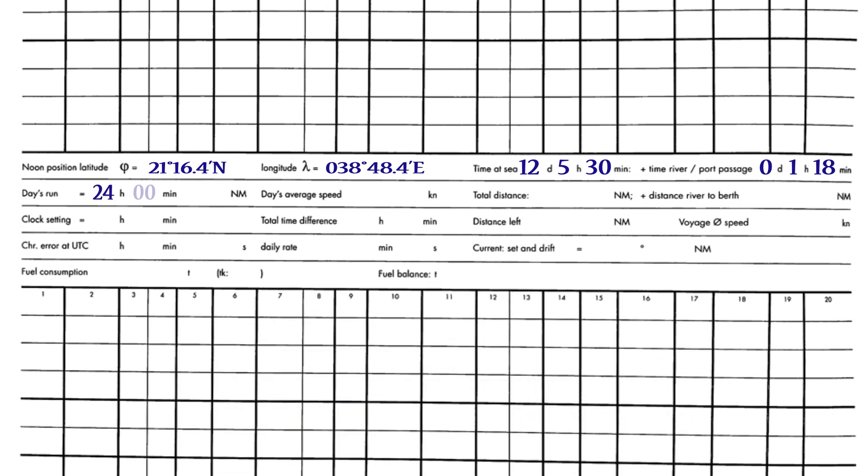Days runtime is the time from noon to noon. If there has been no clock change, it is 24 hours. If the ship's clock has been advanced or retarded due to a change of time zones, it is 23 hours and 25 hours respectively.